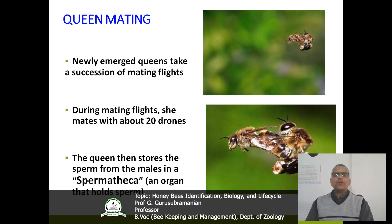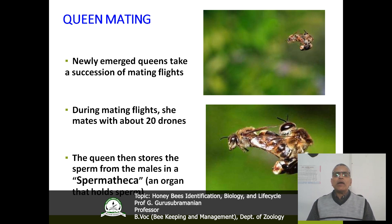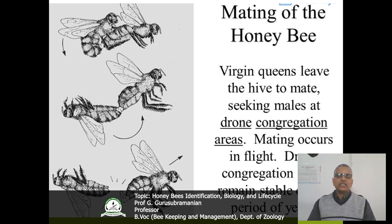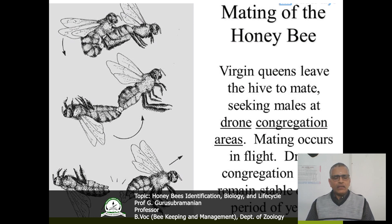Coming to queen mating: newly emerged queens take a succession of mating flights. During mating flights, normally the queen mates with about 20 drones. The queen then stores the sperm from the males in a special organ known as the spermatheca — the spermatheca is a storage organ for the sperm. Virgin queens leave the hive to mate, seeking males at drone congregation areas. Mating normally occurs in flight. Once mating is over, the drone is immediately killed by the queen.